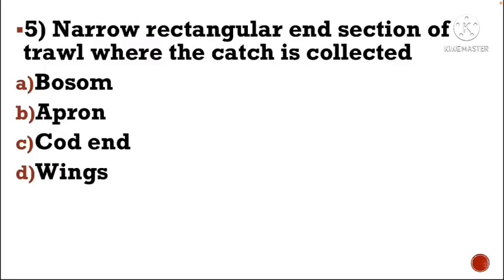Next question: Narrow rectangular end section of trawl where the catch is collected — Option A: bosom, Option B: apron, Option C: cod end, Option D: wings.